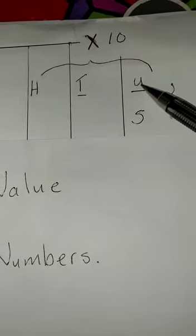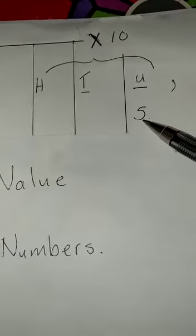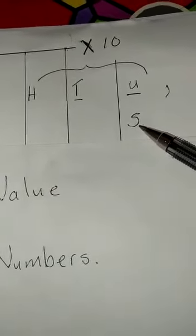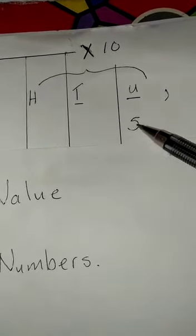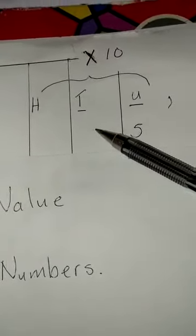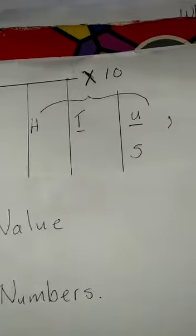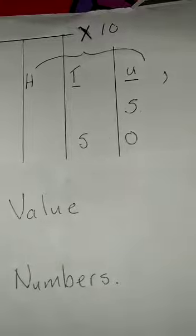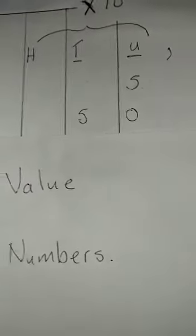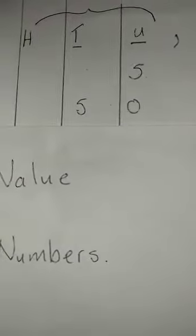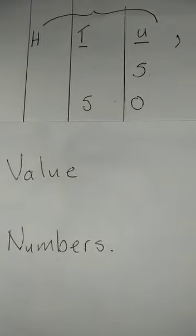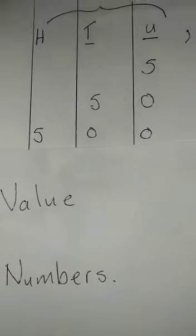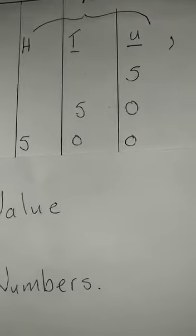When I go from the number 5 there and I times it by 10, I'm now moving the 5 from the units to the tens column, and so the 5 now becomes 50. If I multiply 50 by 10, the 5 now moves one column space to the left and it now becomes 500.